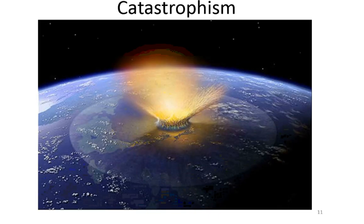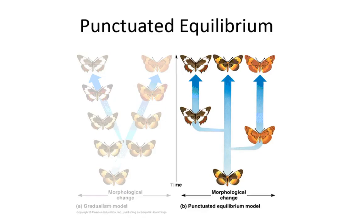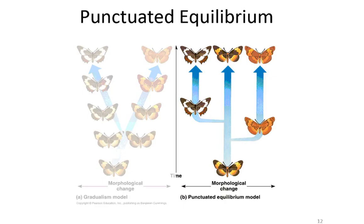A compromise between these two views that is most commonly accepted in biology today is called punctuated equilibrium. This is where evolution occurs with long periods of stasis — long periods of no change — followed by short, quick periods of change. The punctuated part is usually caused by some massive event. It's a blend between catastrophism and gradualism: short periods of rapid change punctuating long periods of equilibrium where no change is occurring.